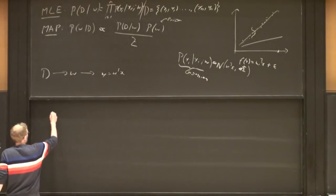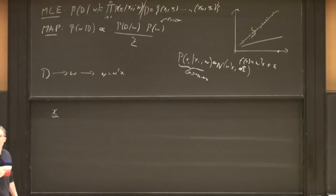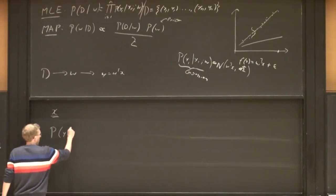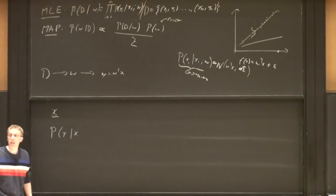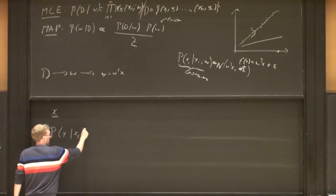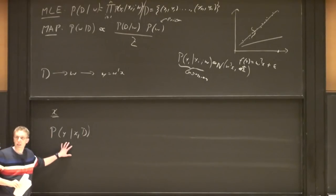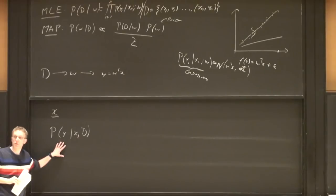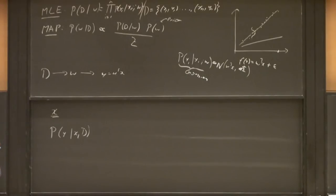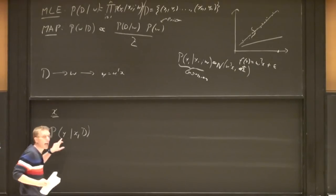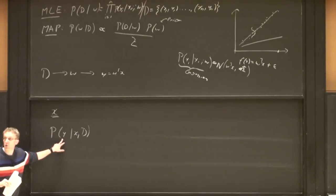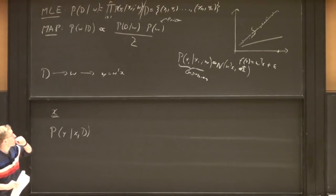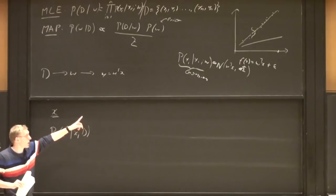Here's what we do. We have a test point X and we'd like to know its label. We want to model P of Y given X and our data D. The beautiful thing is this makes no assumption about the model — we're just saying, given test point X, what's the distribution of label Y? We make the linearity assumption, so for any W we can make predictions, and the trick is to marginalize out the model.